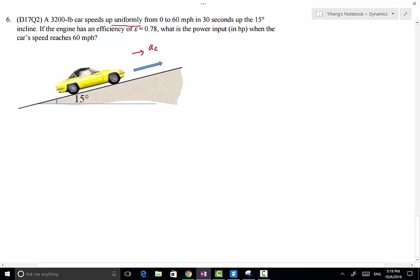And if the engine has an efficiency of 0.78, we need to determine the power input in horsepower when the car's speed reaches 60 miles per hour.